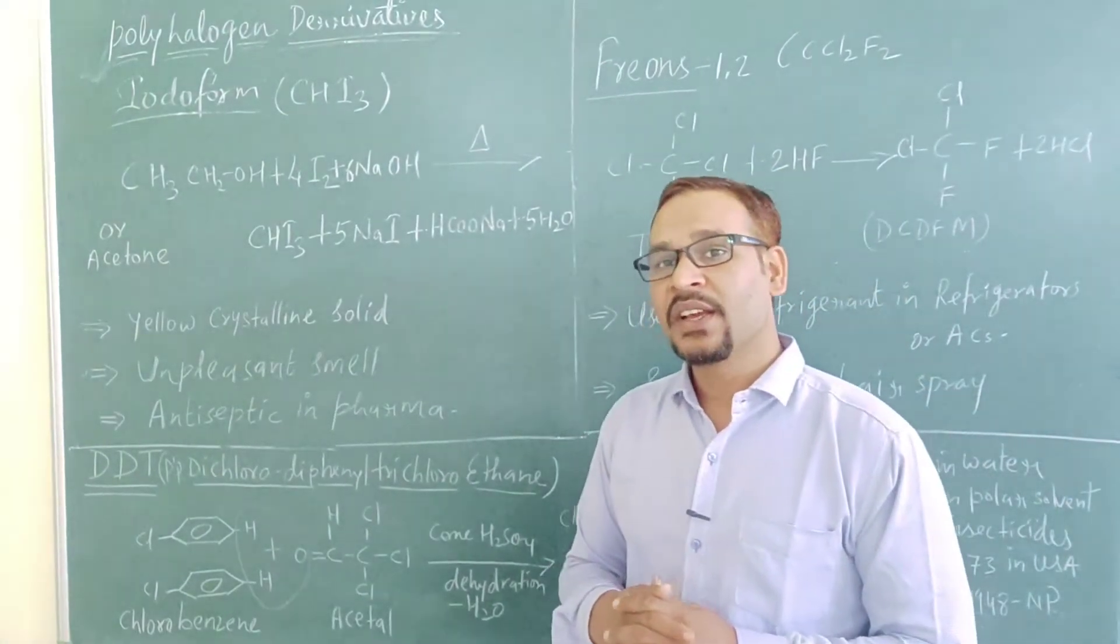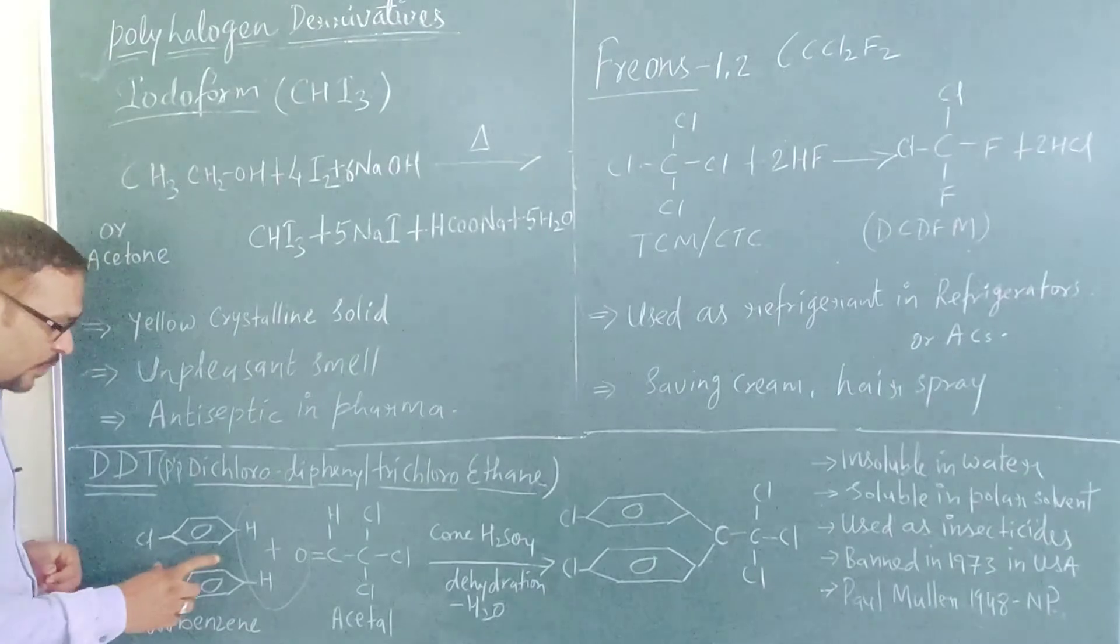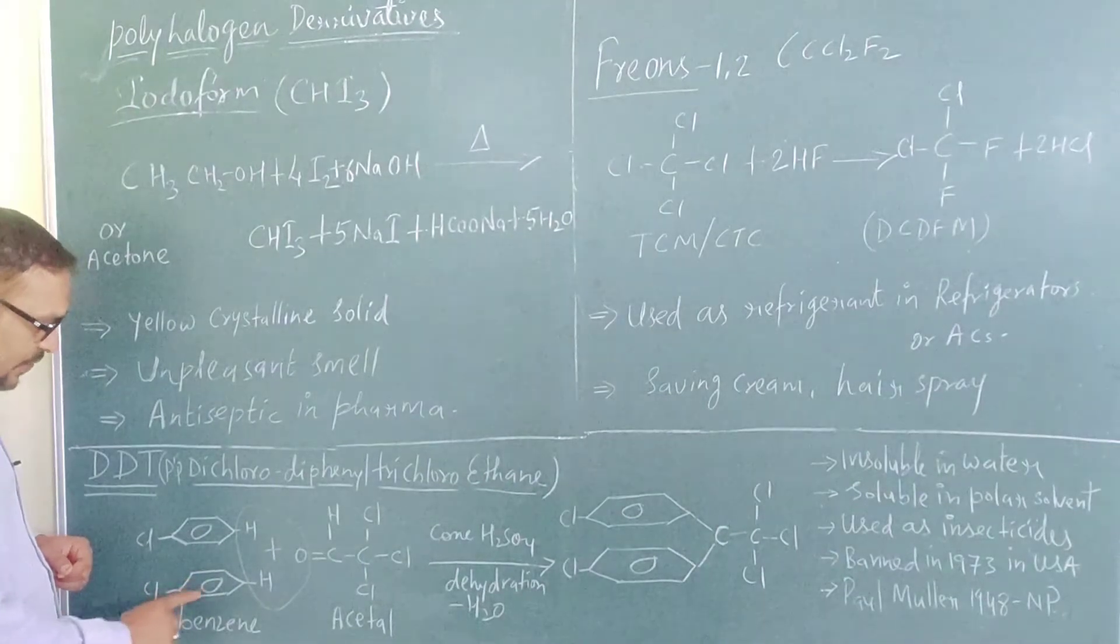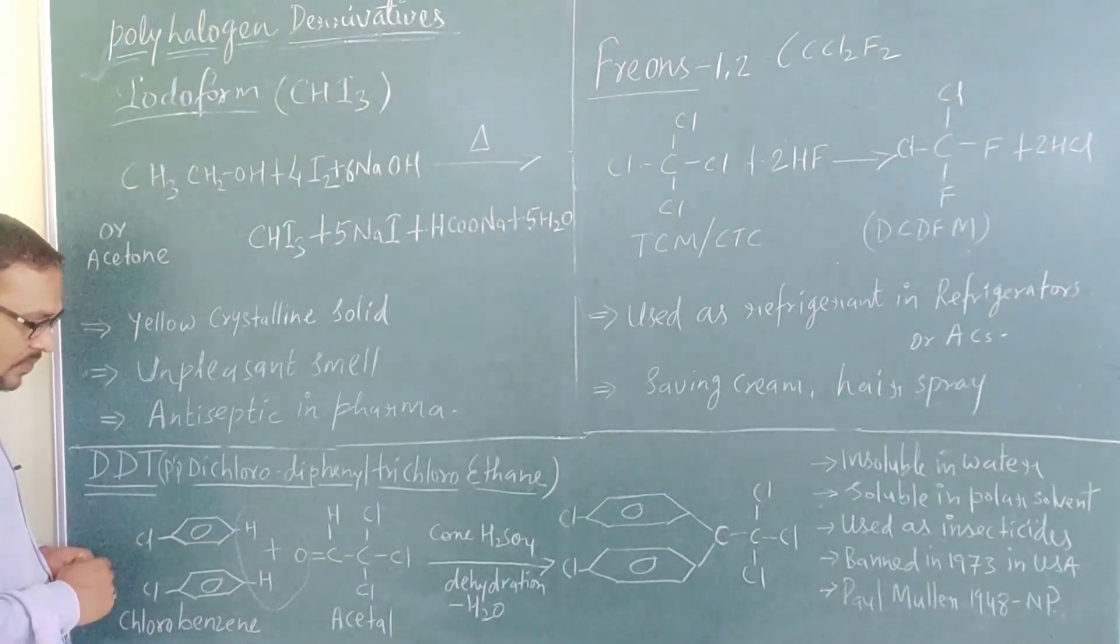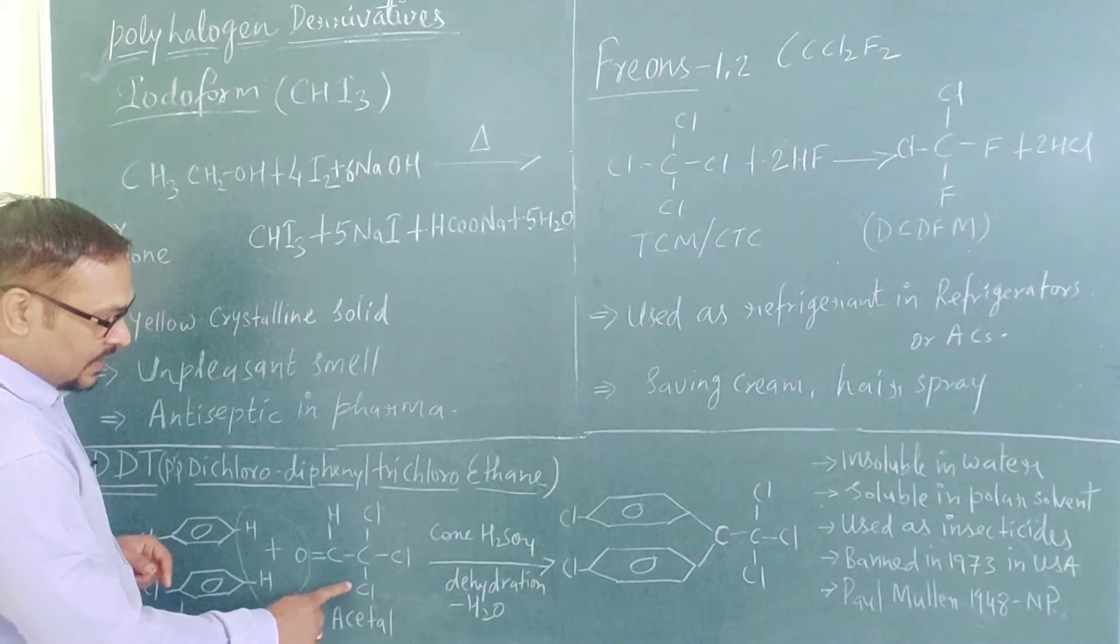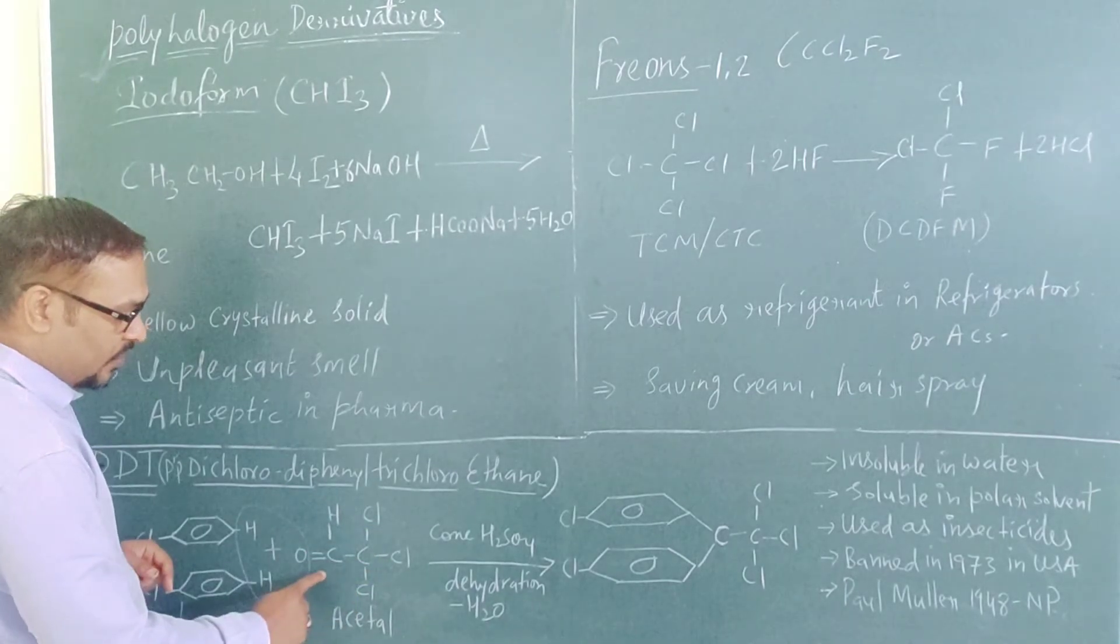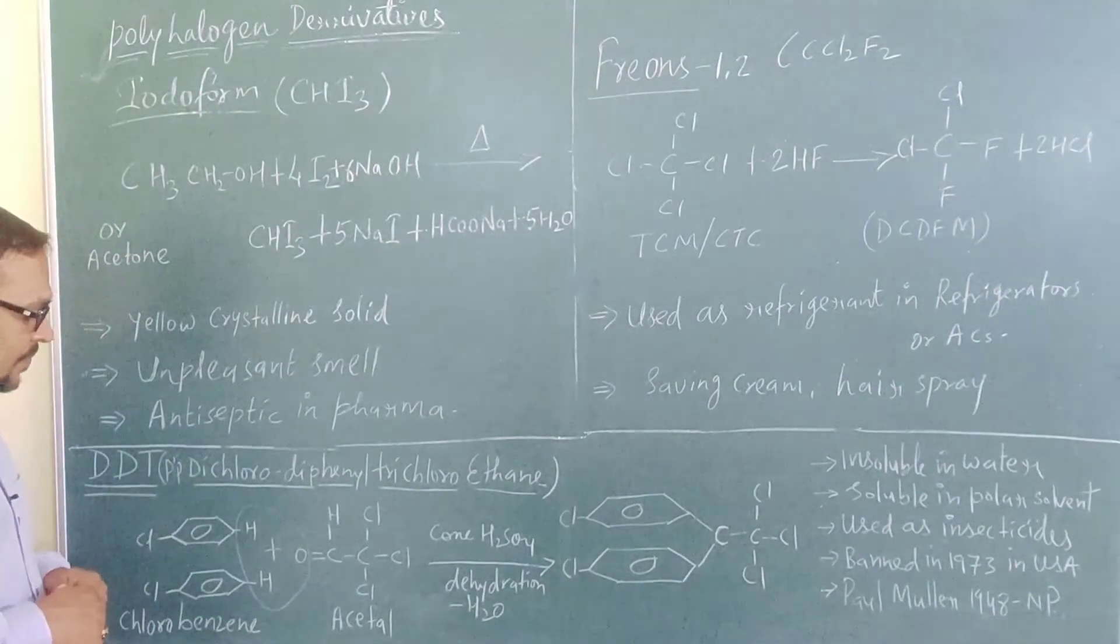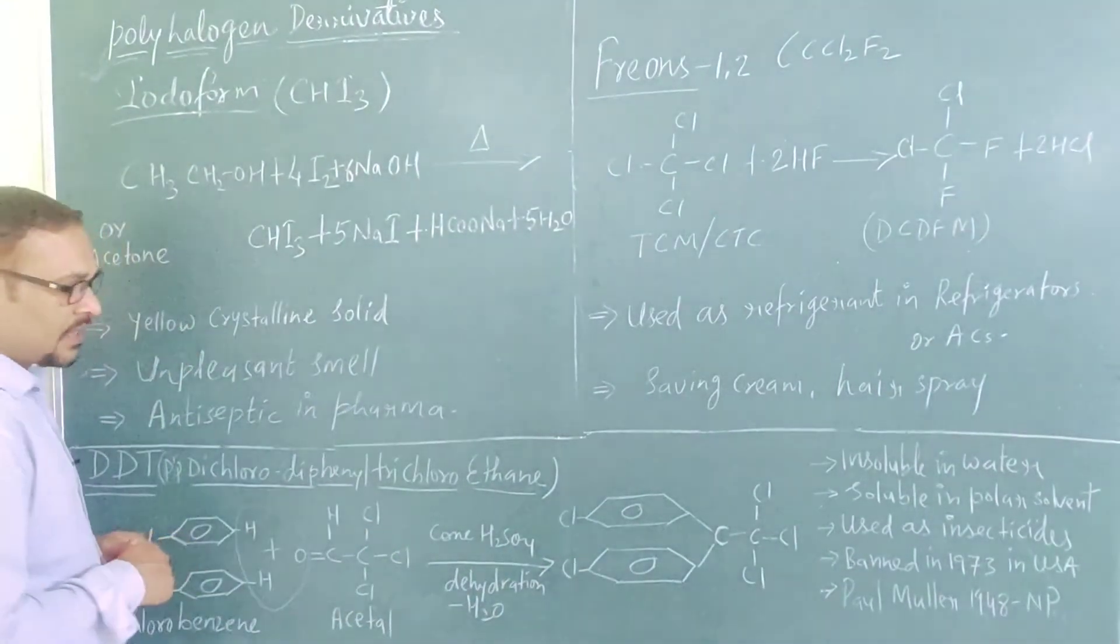Para para dichlorodiphenyl trichloroethane. Now how is it prepared? It is prepared by chlorobenzene and acetyl. Two molecules of chlorobenzene and what is the formula of acetyl? This is CCl3CHO. When 3H is replaced from acetaldehyde, this forms acetyl. In previous video we have formed acetyl also.